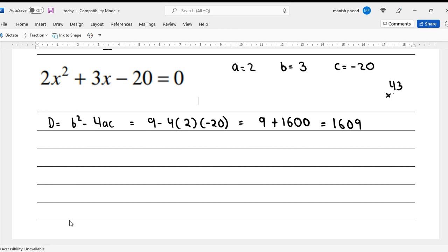Now I'll find the value. So minus b plus root D upon 2a. Minus b is minus 3, root of 1609 upon 4. So any other plus? I don't know the root for that, I have to look at the calculator. It will give you a decimal, I think.